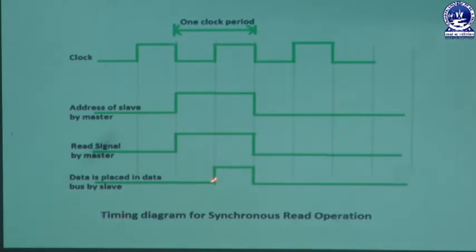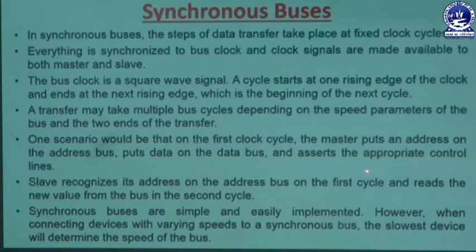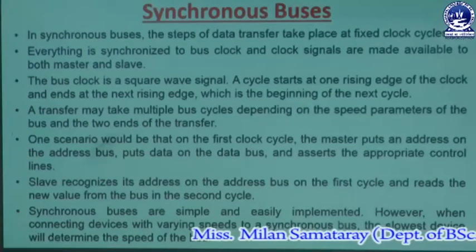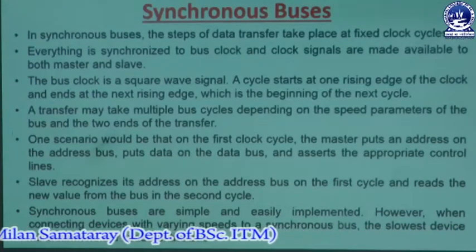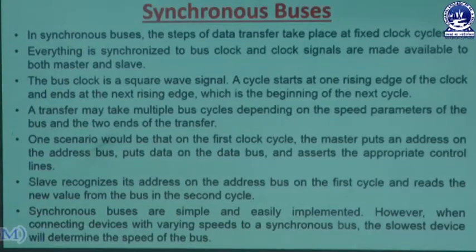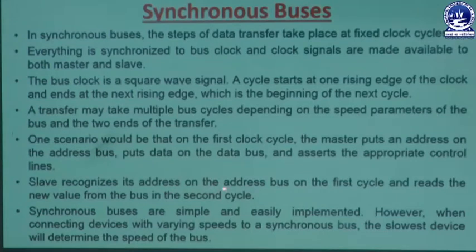Data is placed on the data bus by the slave. This picture shows the timing diagram for a synchronous read operation. The clock may be one or multiple cycles; the control signal here is the read signal. The slave recognizes its address on the address bus in the first clock cycle and reads the new value from the bus in the second clock cycle.